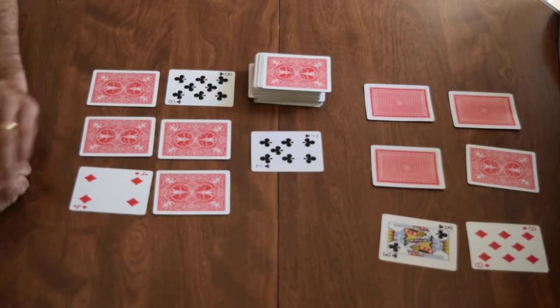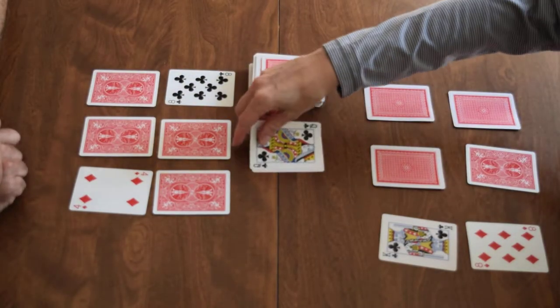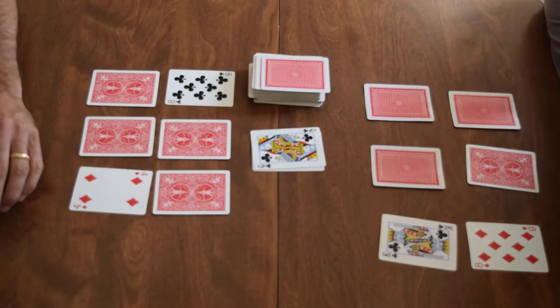They have a choice now, they could take the seven or they could draw a card. If they draw a card, they can choose to keep it, or they could choose to discard it.